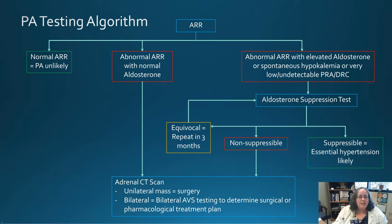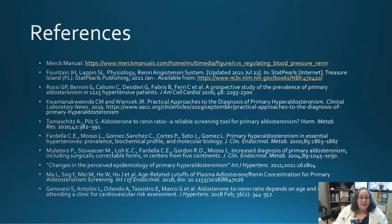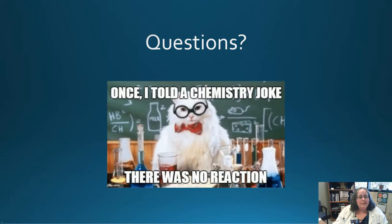In summary, today we reviewed the RAS system, discussed differences between PRA and DRC testing, and talked about age-specific reference intervals and how they apply to patients. Remember: clinician education is key regardless of which test you're doing, and you must not compare PRA and DRC values together. If you have any questions, I'll take them now.